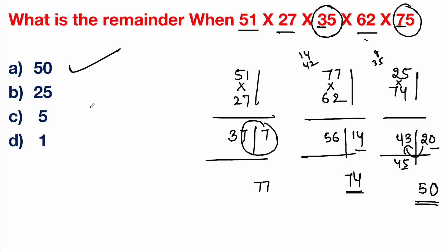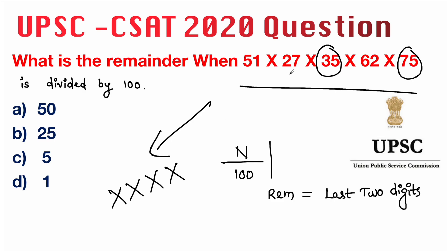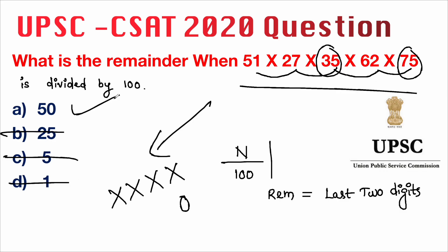One more common sense approach: just observe the unit digits. 7×5 = 35 → ends with 5; 5×2 = 10 → ends with 0; 0×5 = 0 → ends with 0. So the last digit will definitely be 0. Looking at the options, only option A ends with 0, so you can mark it directly. In the next video, we'll discuss last two digits questions when given in powers. Thank you.